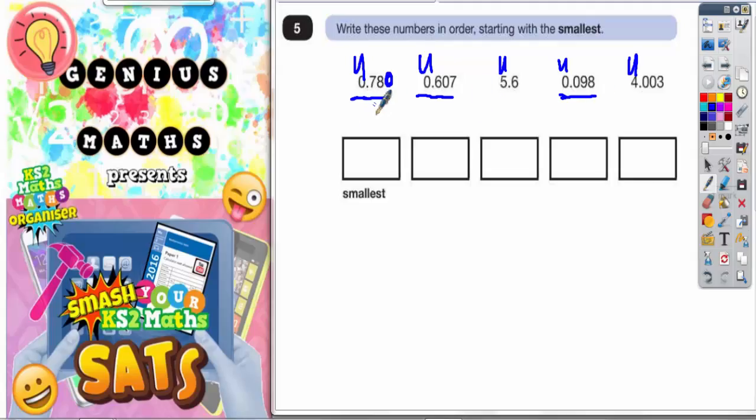Now you shouldn't really say it's 780, but it does actually help in this instance to think of it like that. So we've got 0.780, 0.607, and 0.098. So which is the smaller of those three? Well 98 is smaller than 607 and 780. So this 98 needs to be the smallest. So it's 0.098. That's that one done, so we can tick that one off.